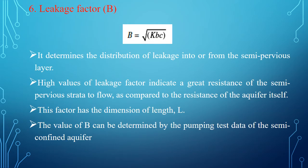The last property of the aquifer is the leakage factor, which is a property of semi-confined aquifer only. It is represented by the formula B equals the square root of KB into C, where K is the hydraulic conductivity, B is the thickness of the aquifer, C is the hydraulic resistance, and B is the leakage factor. The leakage factor determines the distribution of leakage into or from the semi-pervious layer. A high value of the leakage factor indicates great resistance of the semi-pervious layer to flow compared to the resistance of the aquifer itself. This factor has a dimension of length, and its value can be determined by pumping test data in the semi-confined aquifer.